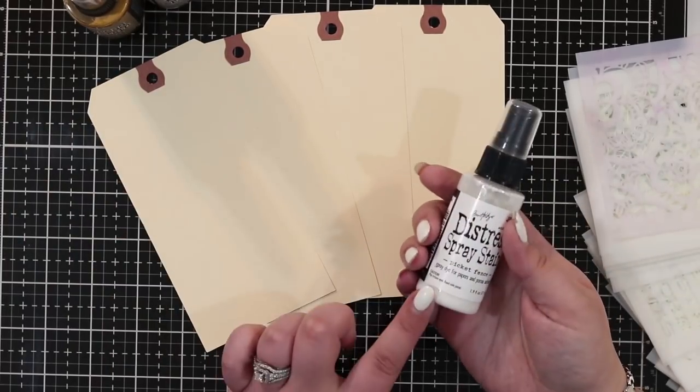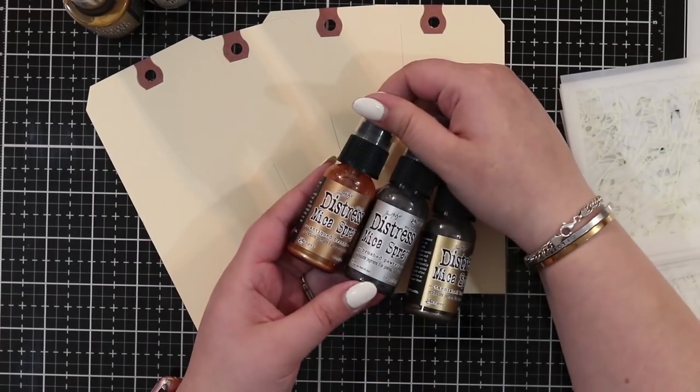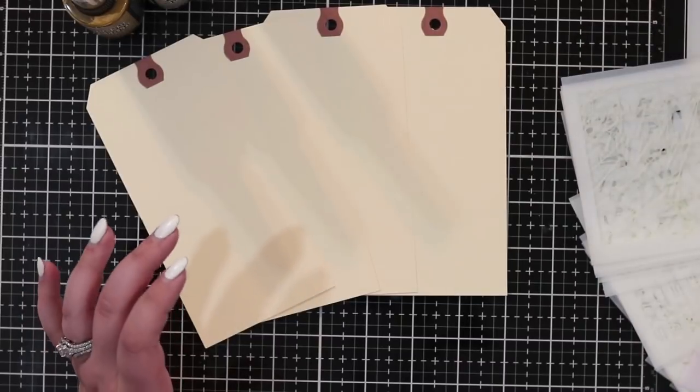We also have a few other sprays as well. There's some distress mica sprays which come in the brass, the pewter and the gold. And I'll be showing you a few different tips of working with these as well.